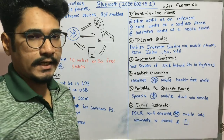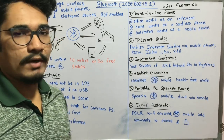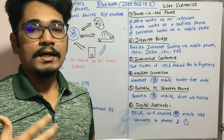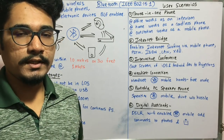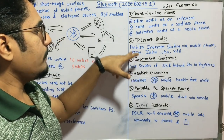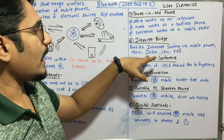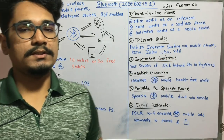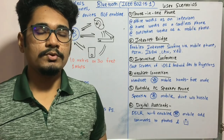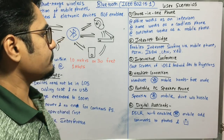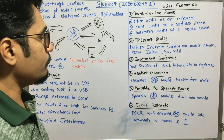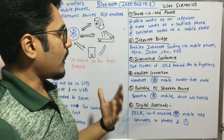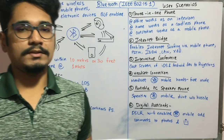The second use case is the internet bridge. It enables internet surfing via a mobile phone even when you don't have Wi-Fi or direct internet access. You can connect through technologies like PSTN, ISDN, LAN, and xDSL via Bluetooth to do internet surfing.